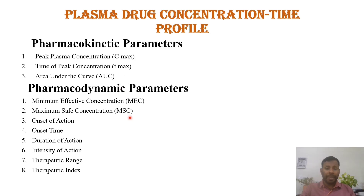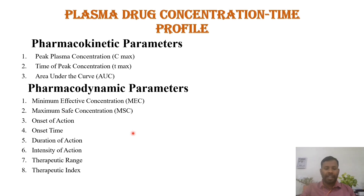Then we are having 8 pharmacodynamic parameters. Those are MEC, minimum effective concentration; MSC, maximum safe concentration; onset of action; onset time; duration of action; intensity of action; therapeutic range; and therapeutic index.